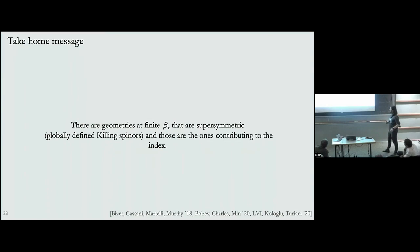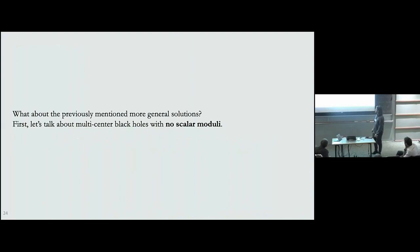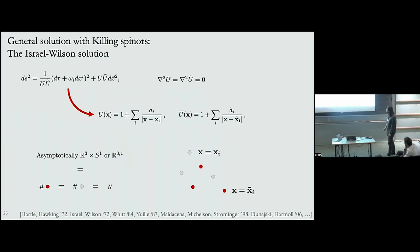What about the more general solutions I mentioned? First I'll talk about multi-center black holes that don't have any scalar moduli — relevant in supergravity without any vector supermultiplets. In fact, if I look at spacetimes that are asymptotically flat, all the geometries that have Killing spinors have been classified. One such geometry is called the Israel-Wilson solution.